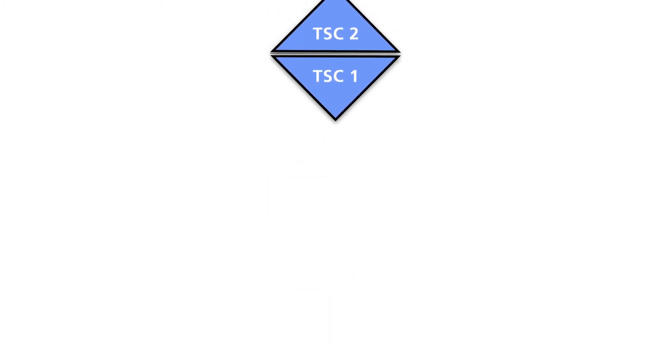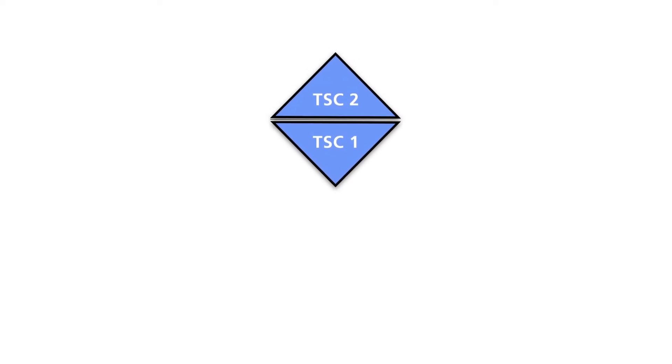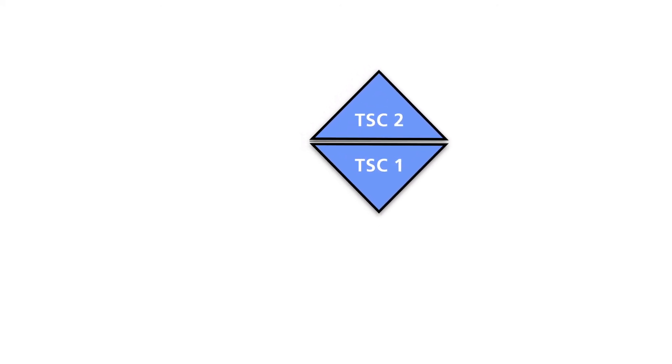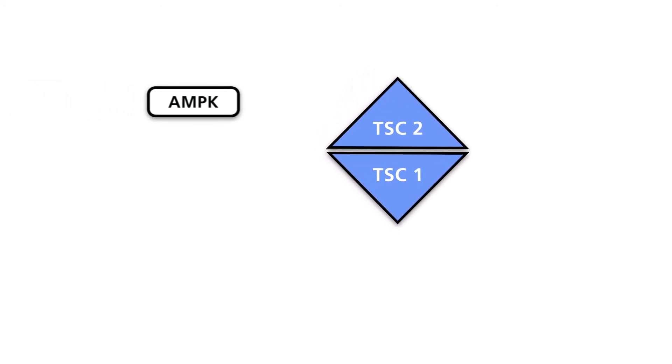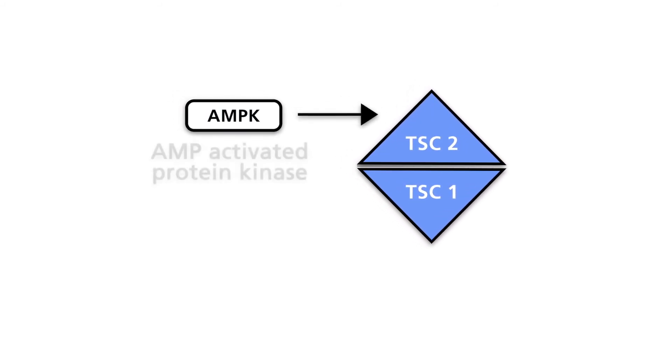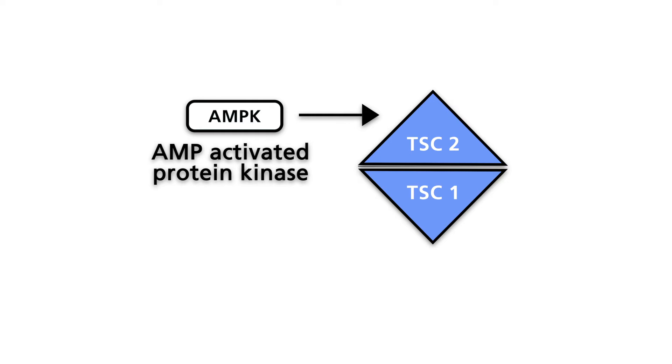Several signal transduction pathways lead to the TSC1-TSC2 complex. Specifically, TSC2 is a substrate of the AMP-activated protein kinase.